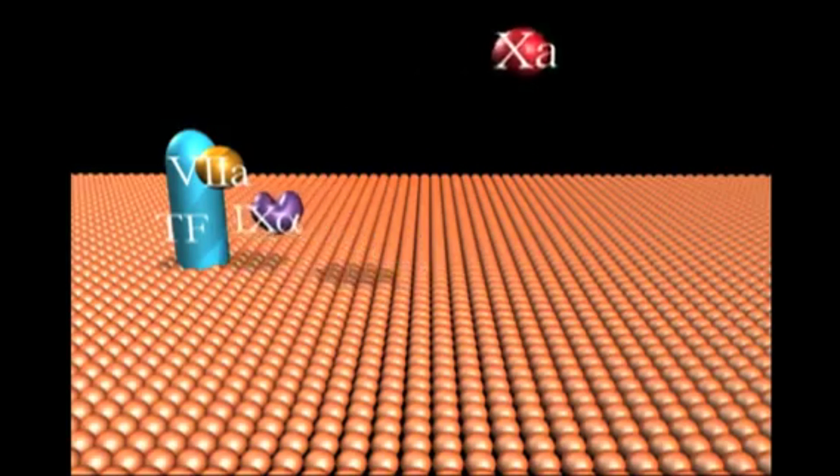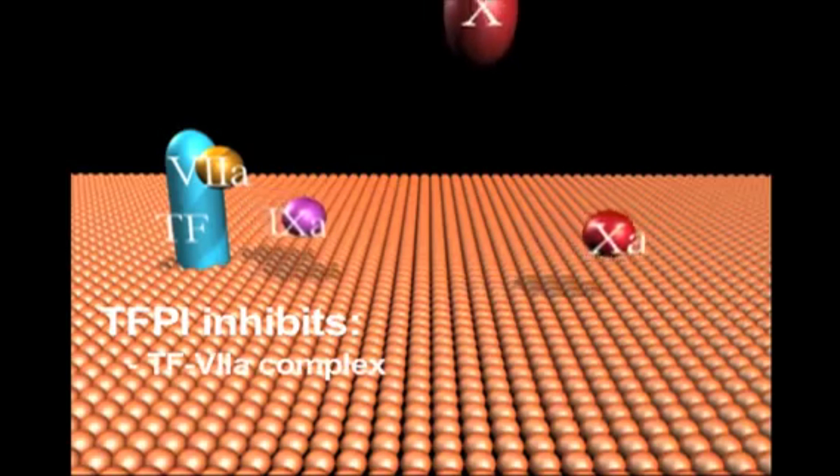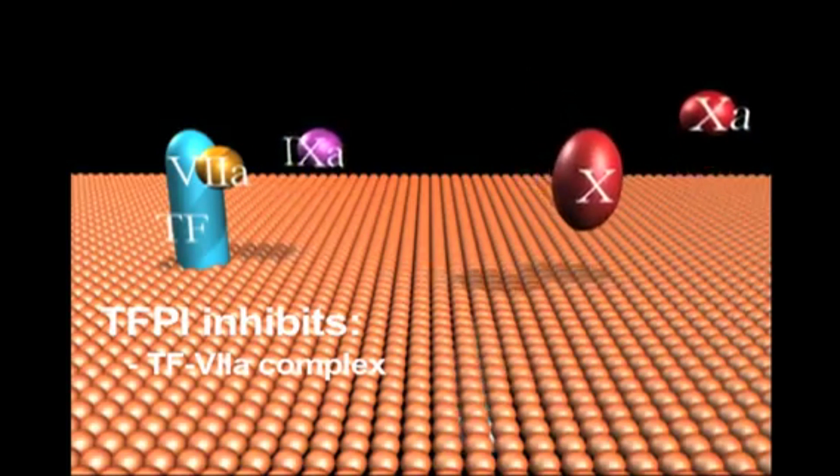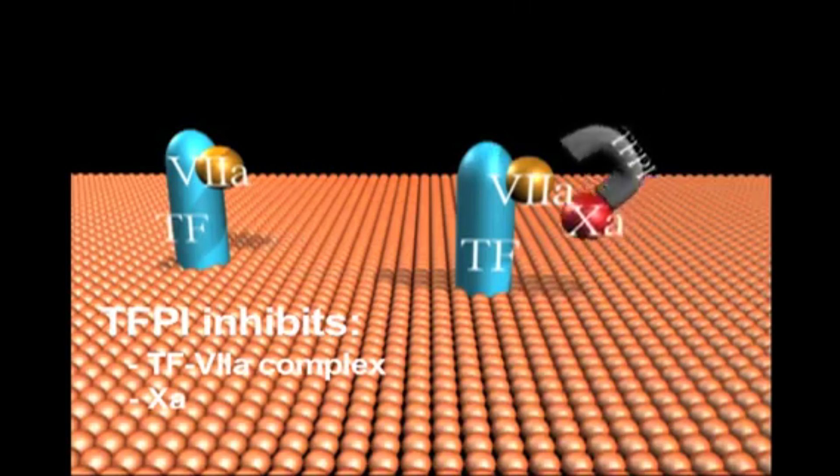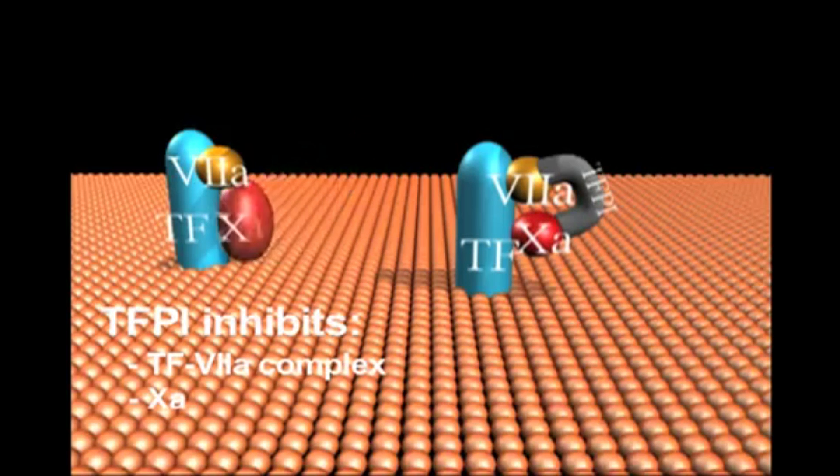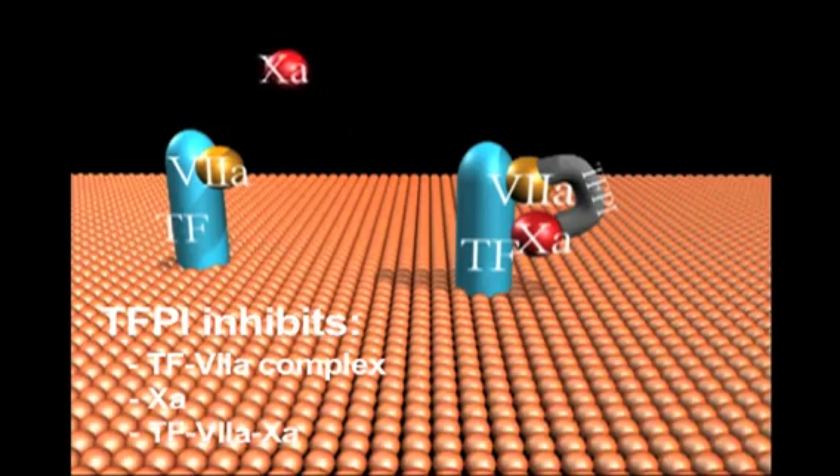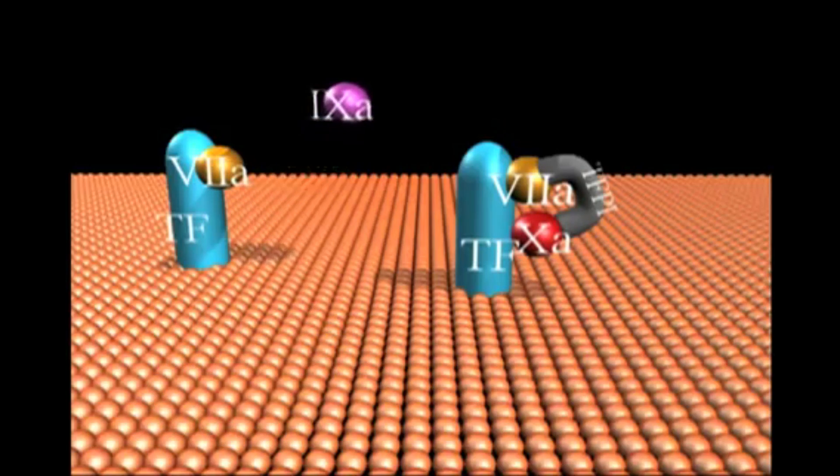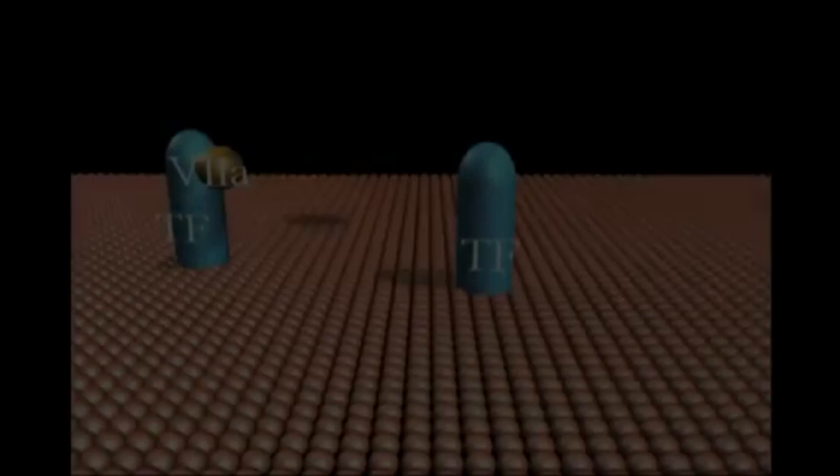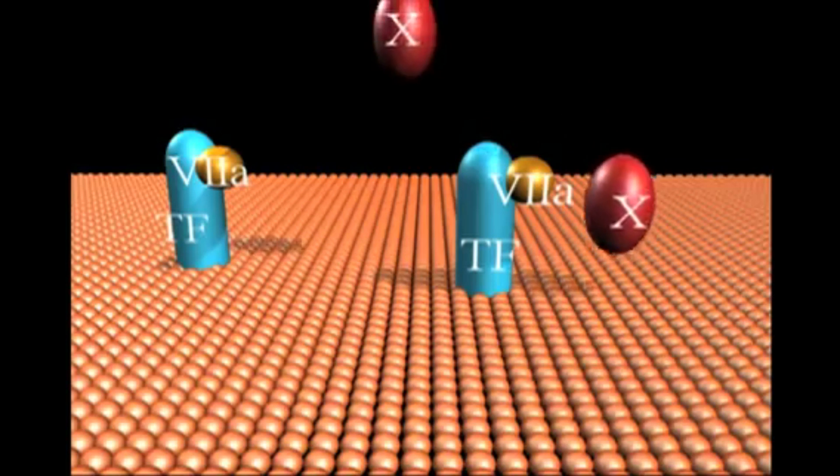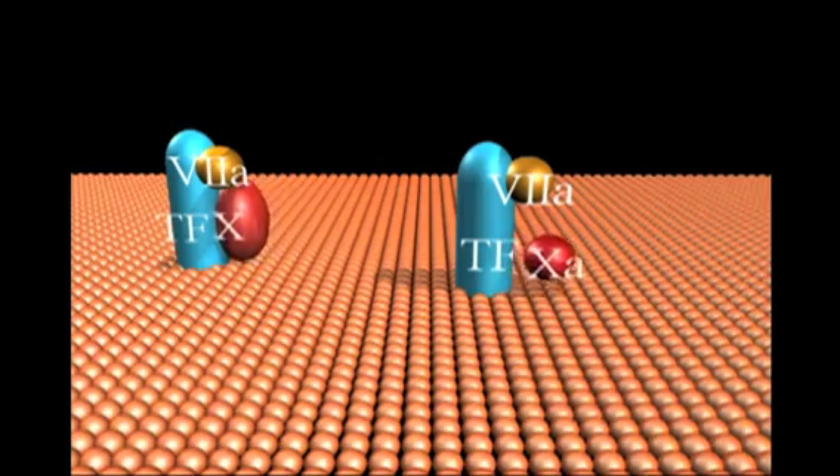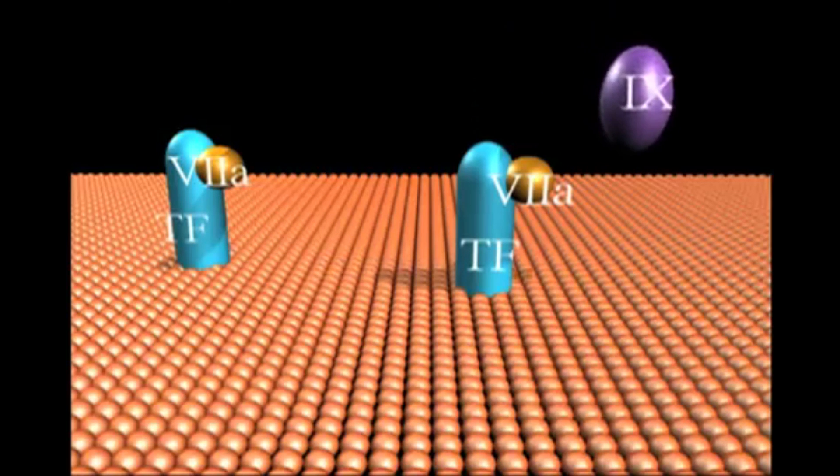TFPI is a triple-kunitz domain inhibitor which can bind both the tissue factor factor 7a complex (TF7a) and product factor 10a. However, the preferred target for TFPI is the product complex of TF factor 7a, factor 10a. The preferred substrate for TF factor 7a is factor 10. Factor 9 is also a substrate but with a significantly inferior rate of activation.